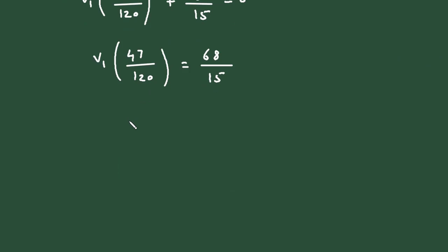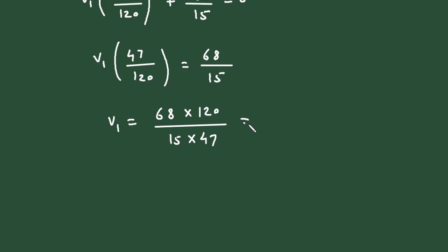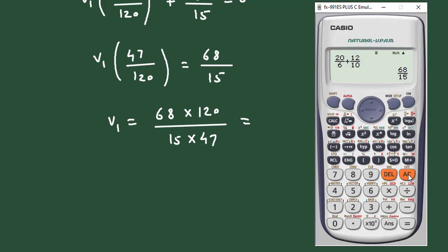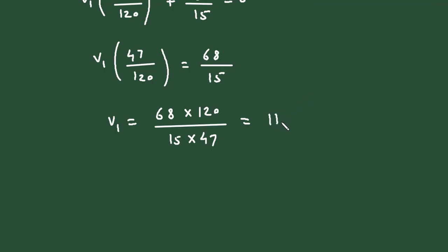Therefore V1 equals 68 multiplied by 120, divided by 15 multiplied by 47, which gives 11.57. Since it is a voltage, its unit will be volts. So V1 is equal to 11.57 volts.